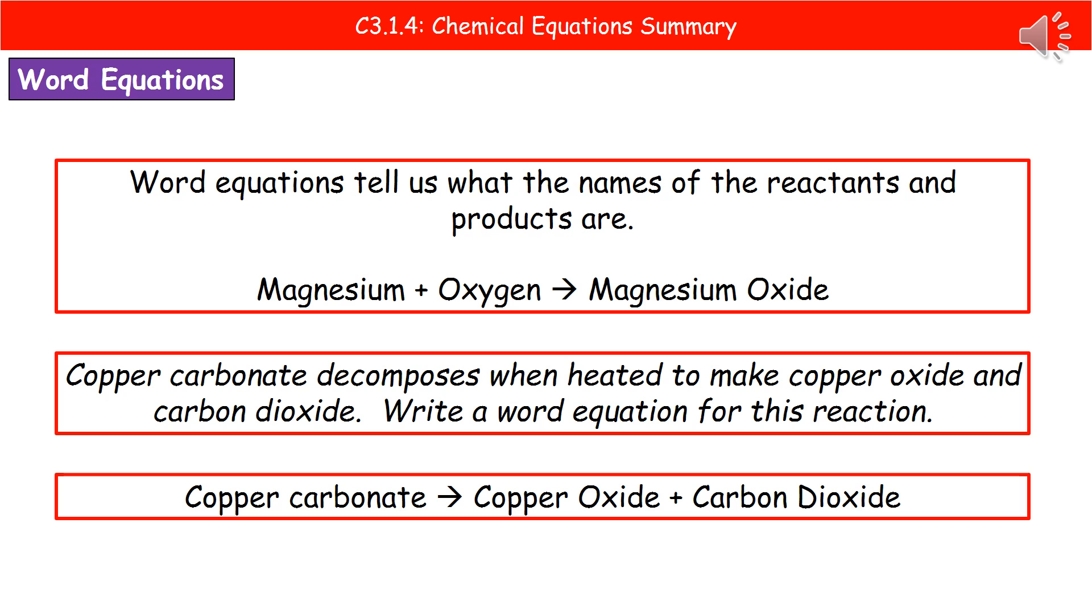Word equations tell us the names of our reactants and the names of our products. So I've given you an example of a reaction between magnesium and oxygen there, making magnesium oxide. Our reactants always go on the left hand side, which is magnesium and the oxygen, and the products on the right, which is magnesium oxide.